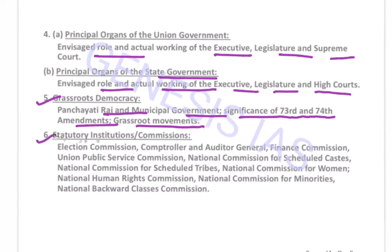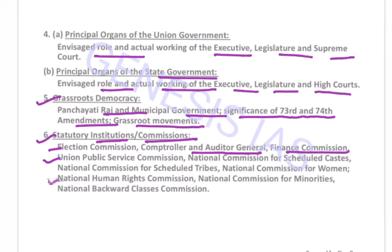The sixth topic is Statutory Institutions and Commissions. It includes the Election Commission, Comptroller and Auditor General (CAG), Finance Commission, UPSC, National Commission for Scheduled Castes, National Commission for Women, National Human Rights Commission, National Commission for Minorities, and the National Backward Classes Commission.